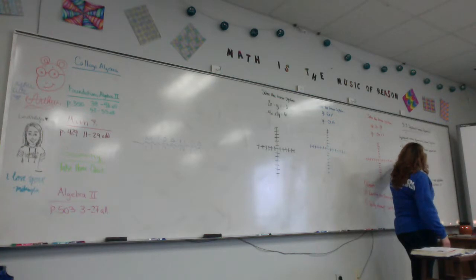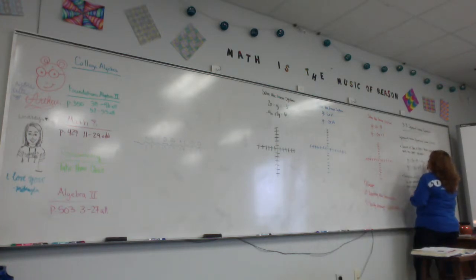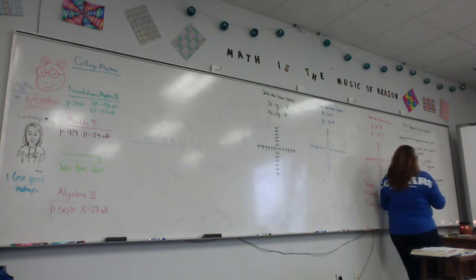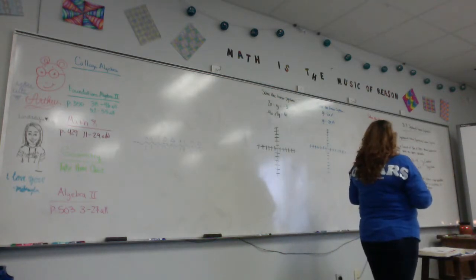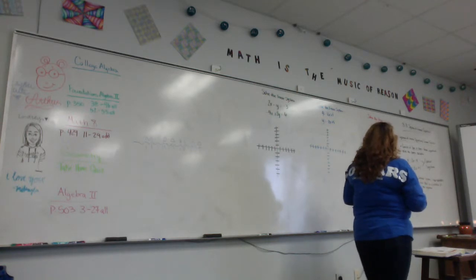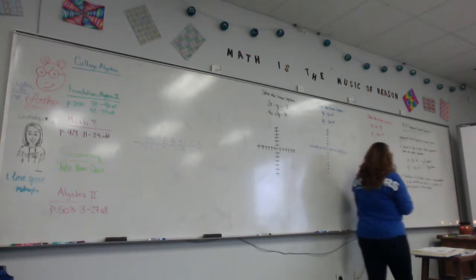y equals 2x minus 4, y equals negative 3x plus 1. This is a linear system. This right here is a linear system. They're both equations of lines because they both got a y and an x in them.